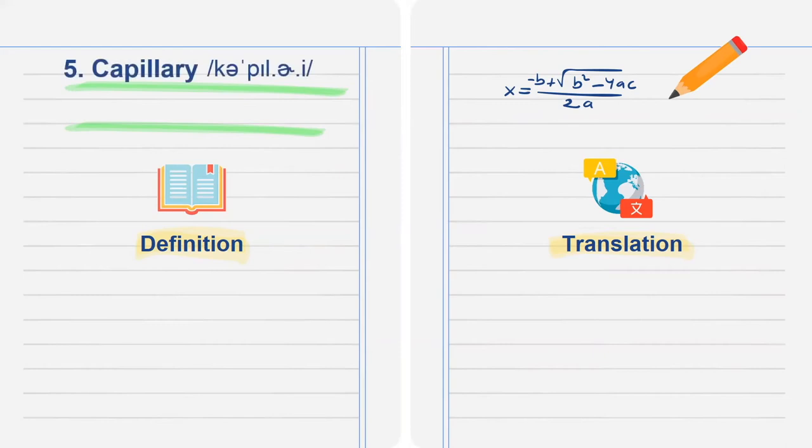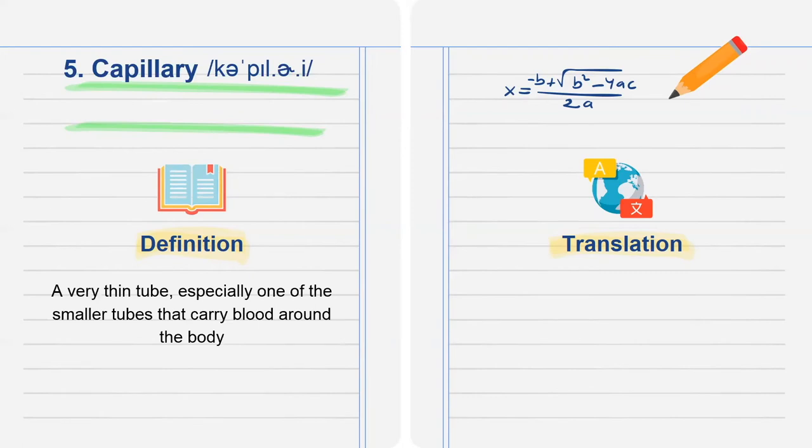Next is capillary. A very thin tube, especially one of the smaller tubes that carry blood around the body. Translation.